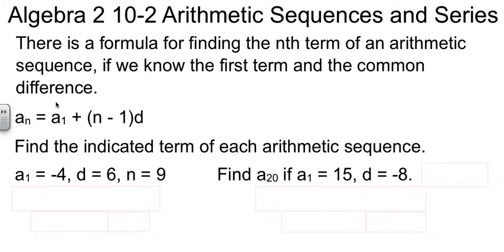If we know the first term and we know that difference, we can find any term in the sequence. Using the an formula, as I like to call it, the nth term in the sequence is equal to the first one, plus n minus 1 times the difference.